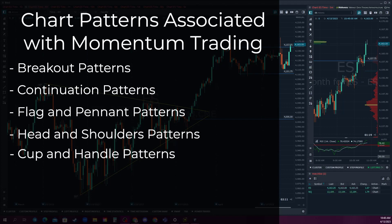Head and shoulders patterns occur when an asset's price makes three peaks with the middle peak being the highest; traders often look for this pattern as a sign that an uptrend is about to reverse. Cup and handle patterns occur when an asset's price forms a U-shape followed by a small dip forming a handle; traders often look for this pattern as a sign of a potential trend signal.